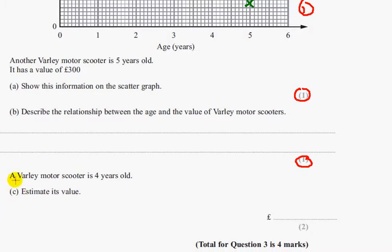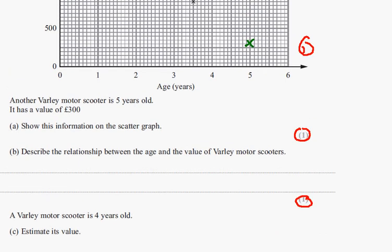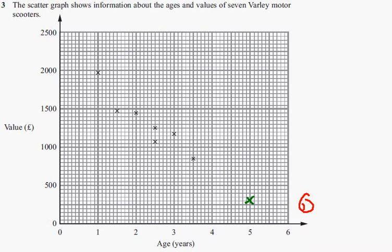Part C, a Vali Motor Scooter is 4 years old. Part C says estimate its value. So we're going to use this scatter graph and immediately you should be thinking sort of line of best fit. You don't actually have to use a line of best fit, but a straight line roughly kind of going through the points.